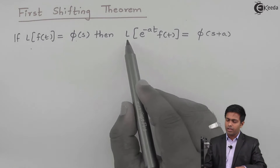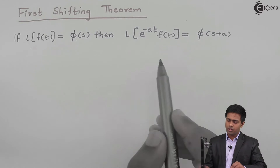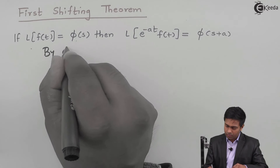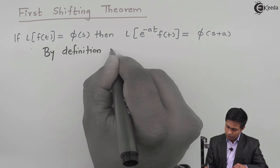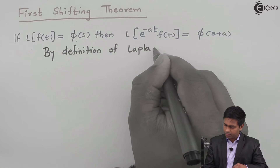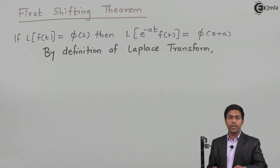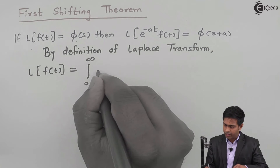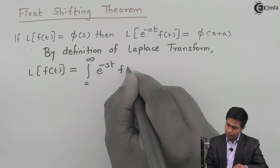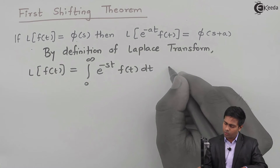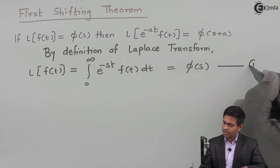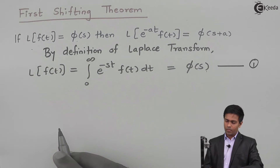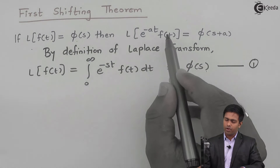Now first of all let's derive this property, or the theorem. To derive this theorem I am going to use the definition of Laplace transform. By the definition of Laplace transform, the Laplace of any function of t is equal to the integration from 0 to infinity of e raised to minus st times f(t) dt, and its value is given by F(s). Whenever we solve this integration we get the function of s in the answer.